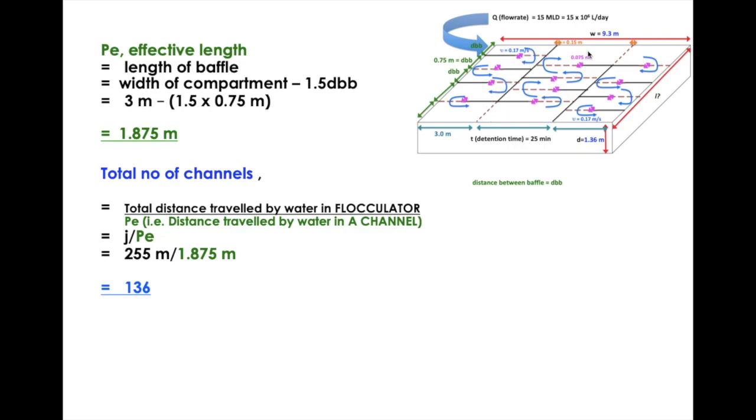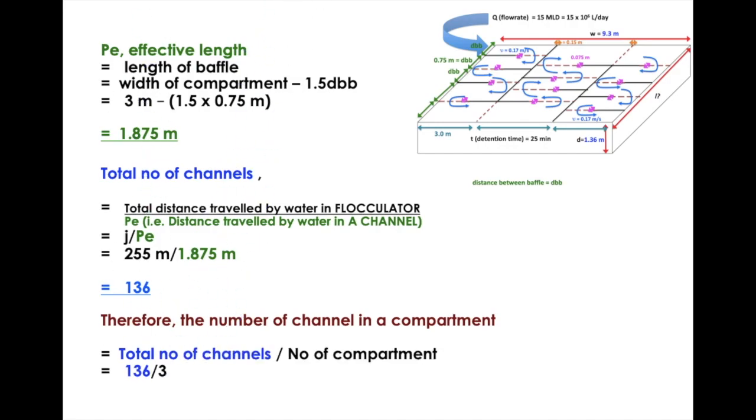Remember we have 3 compartments, so the total has to be divided into 3 so that we know how many channels are present in a compartment. So we divide this value into 3 to find out the number of channels in a compartment. 136 divided by 3 equals 45.333 channels.